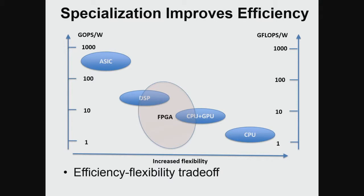If we add a GPU to that system, we can be more energy efficient — a few gigaflops per watt. GPUs are used for video gaming and computing and are very popular. However, doing computing with a GPU requires specialized code like CUDA on NVIDIA processors. Even more efficient would be DSPs, but they usually need special programming techniques and you cannot just take any C code, compile it, and get energy efficiency.